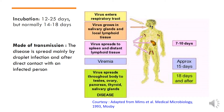With viremia, the virus starts spreading throughout the body to the testes, ovaries, pancreas, thyroid, salivary glands, and other organs, and the disease starts manifesting itself.